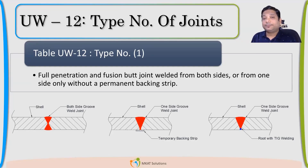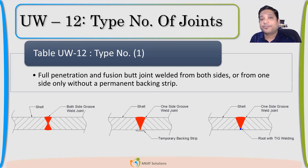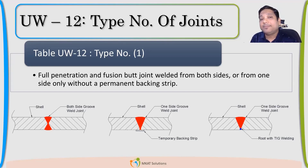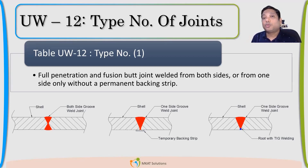As a designer, if we are designing and then drawings and fabrication will happen, we have to be very careful. For example, if I am taking joint efficiency as 1, I need to ensure that the drawing has type number 1 correctly. If the joint is correctly mentioned as per code, so that I can get full radiography, I will get joint efficiency as 1.